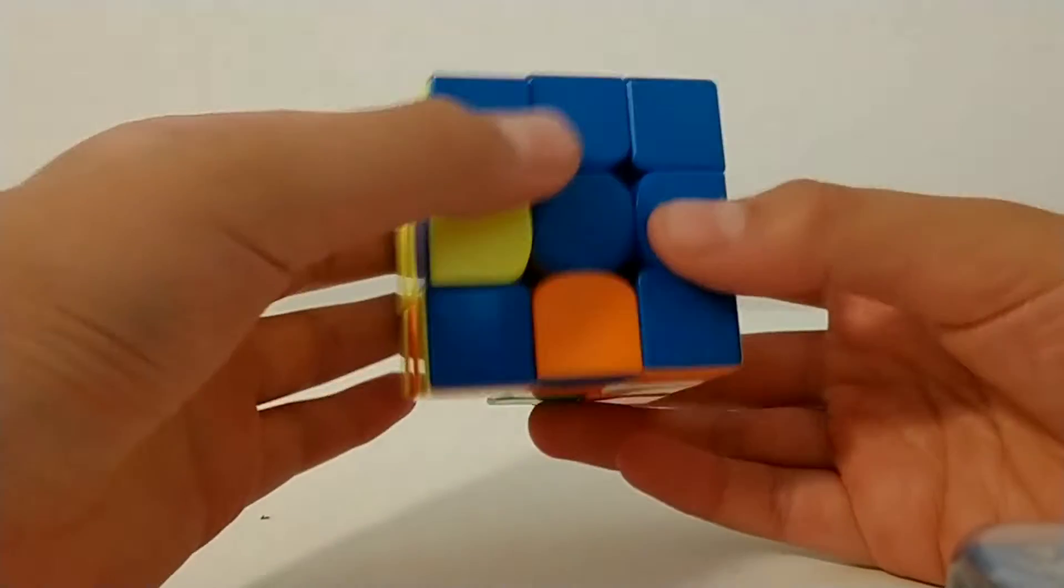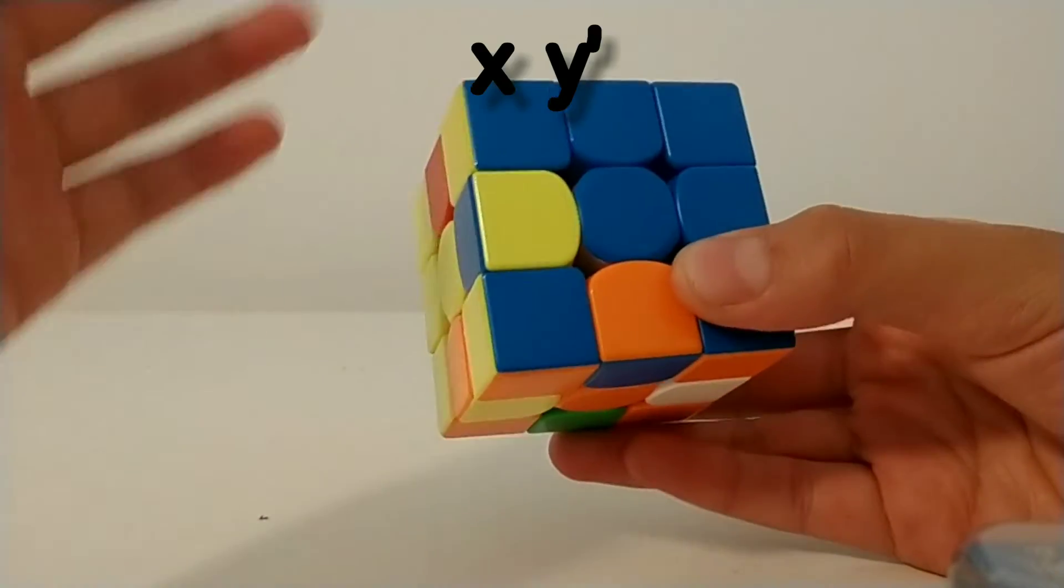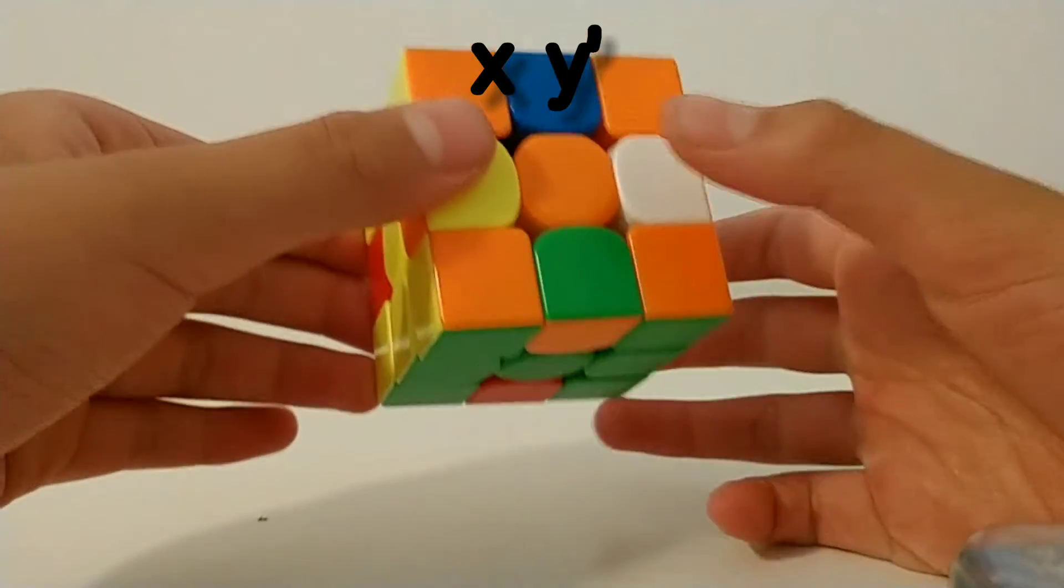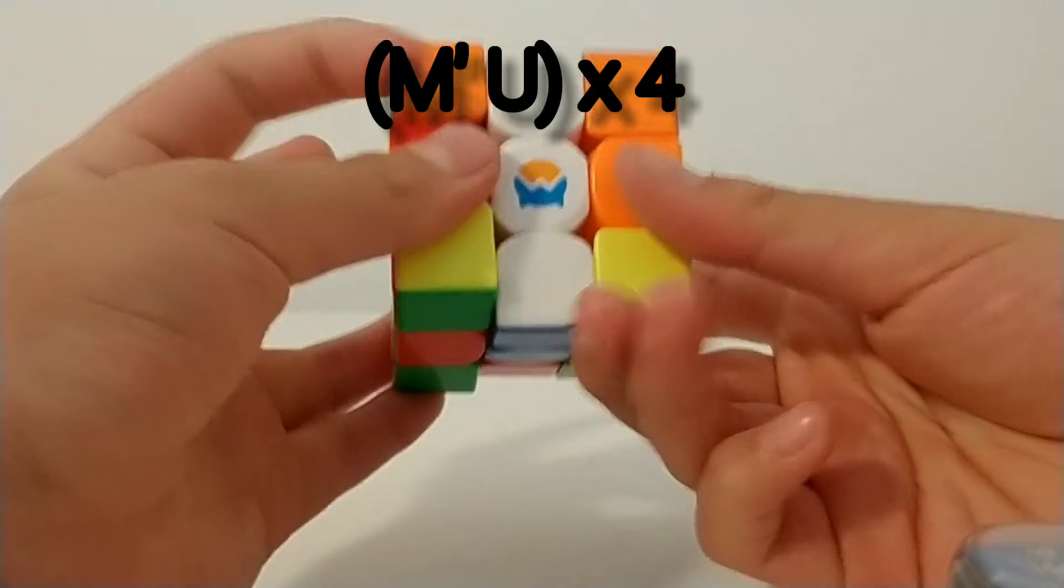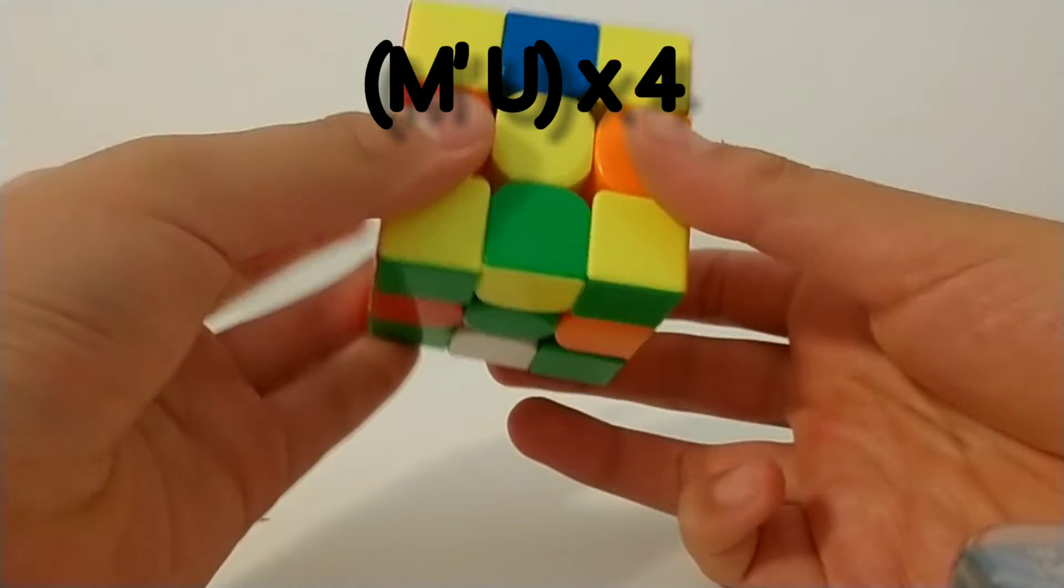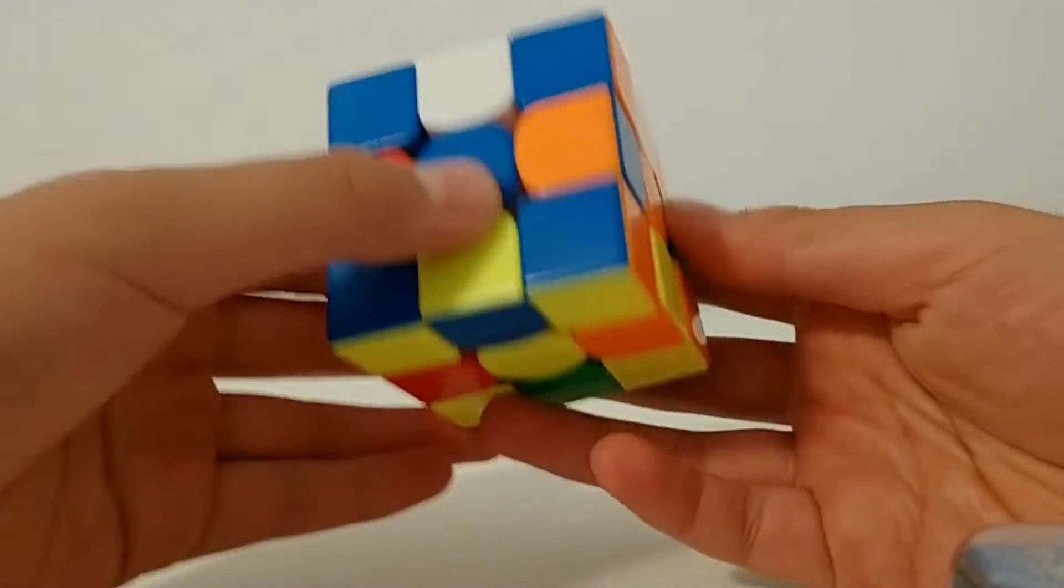And then you do that sequence of moves again. And that's four times. And now when you do that one last time, so X Y prime, which is face the bottom and then face the left. And then the four M prime U and then the four M prime U. Now you have the super flip pattern, just like that.